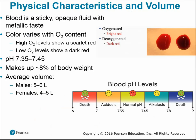Blood is a sticky, opaque fluid with a metallic taste due to the iron in it. The color varies with oxygen content — higher oxygen levels produce a brighter red color. Blood pH ranges from 7.35 to 7.45, a very narrow range; going outside these limits can cause acidosis, alkalosis, or even death. Blood volume makes up roughly 8% of total body weight; average volume for males is 5–6 liters and for females 4–5 liters.